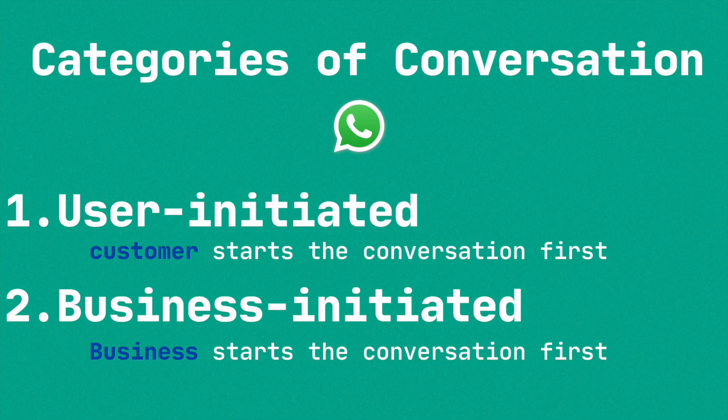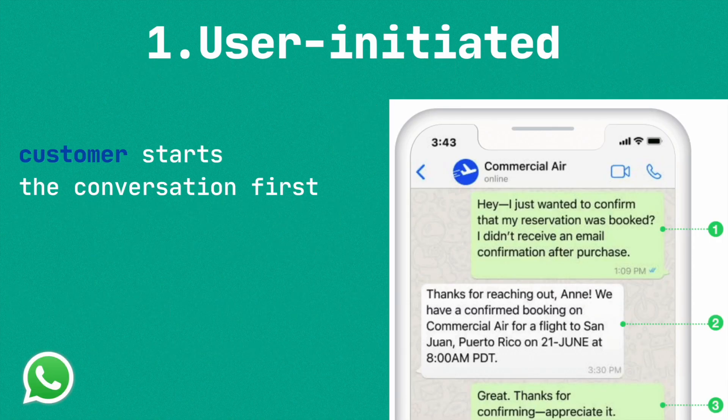In order to understand the billing plan, you need to understand there are two categories of messages in the WhatsApp Cloud API. The first one is user-initiated and the second one is business-initiated. Let's see in detail.